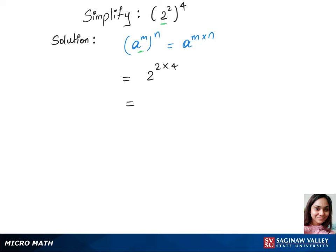This gives us 2 and 2 times 4 is 8, and we can write this as 256. That's our answer.